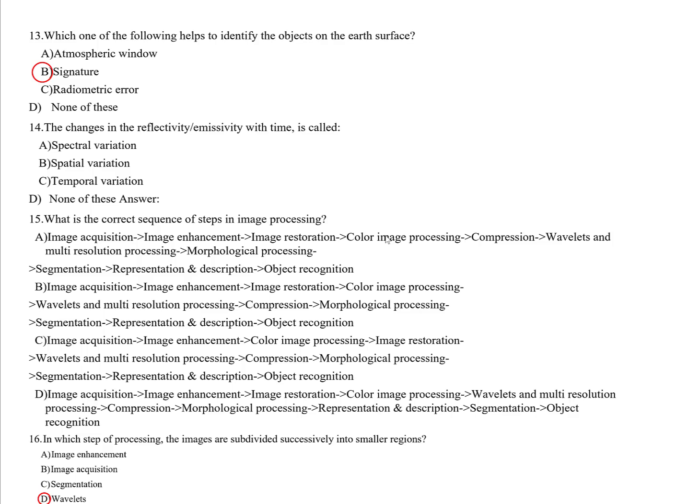Question fourteen: The changes in reflectivity or emissivity with time is called: A — spectral variation, B — spatial variation, or C — temporal variation. The correct answer is C, temporal variation, because it is a time-based variation in reflectivity or emissivity.